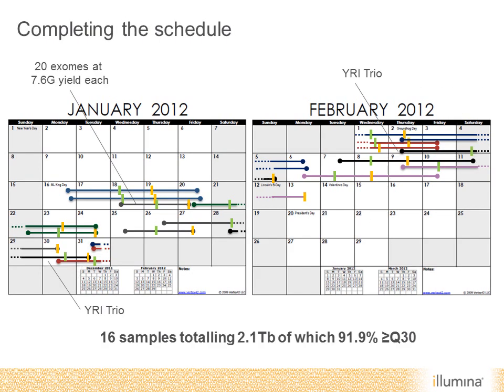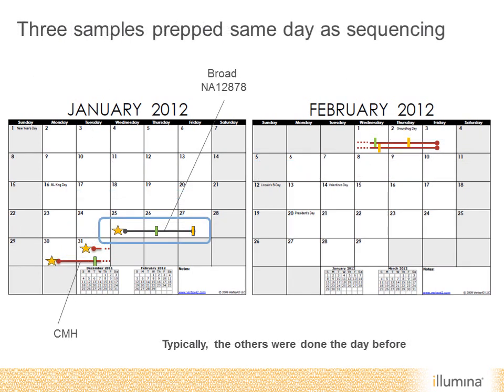We also sequenced a further 20 exomes in a single run, yielding 7.6 gigabases of data per exome, and a Yoruban trio. In all, we sequenced 16 samples totaling 2 terabases of data, of which nearly 92% was high quality — greater than or equal to Q30. Three of those samples were prepped the same day as the sequencing, shown with a star. I'll highlight the Broad sample, which was a 48-hour, two-day turnaround from sample through to shipping the data.